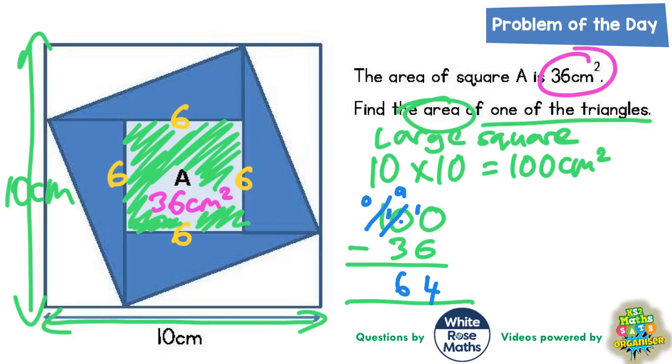So if you take square A out of the larger square, then that means you're left with 64 centimeters squared. And that 64 centimeters squared is the 8 triangles put together. Now we only want 1 of the triangles, so now we know that the 64 centimeters squared is 8 triangles.